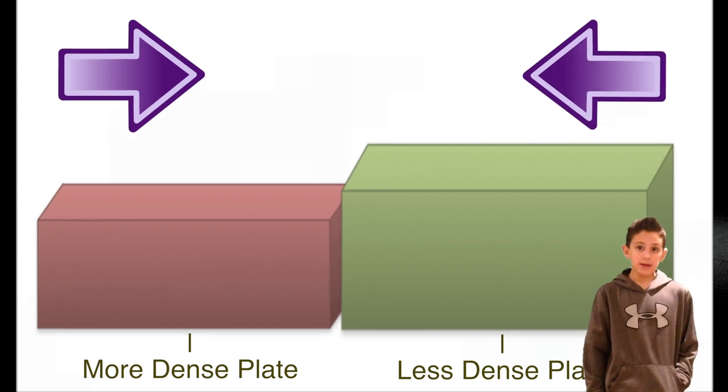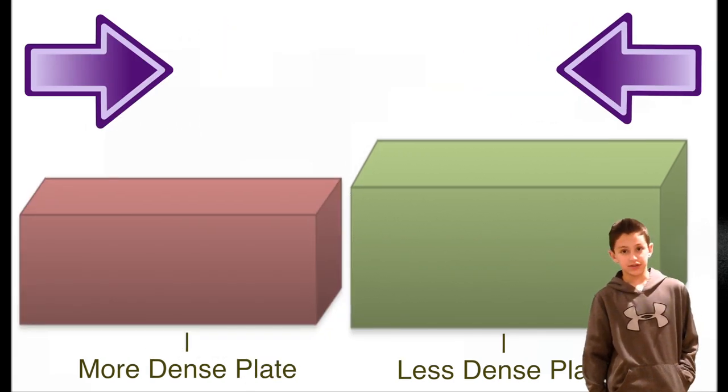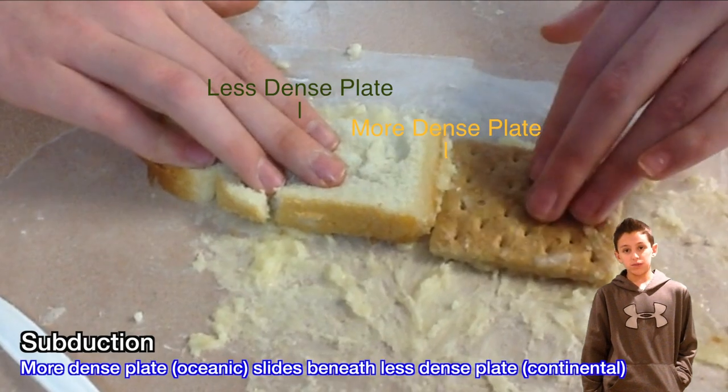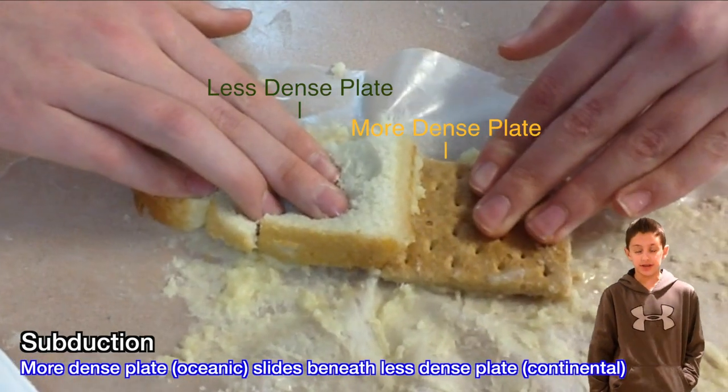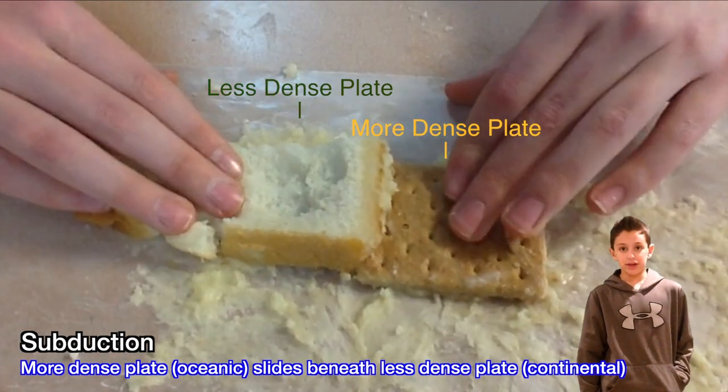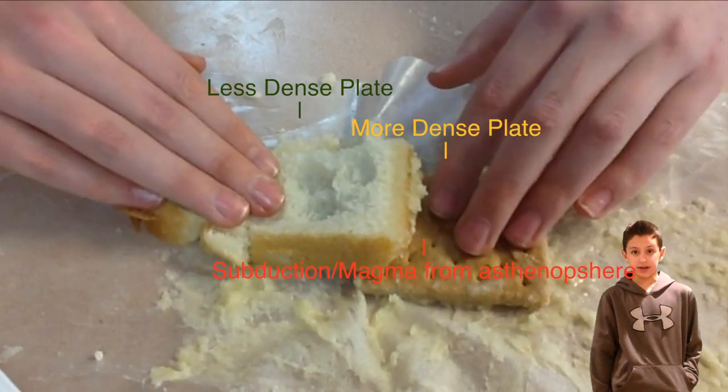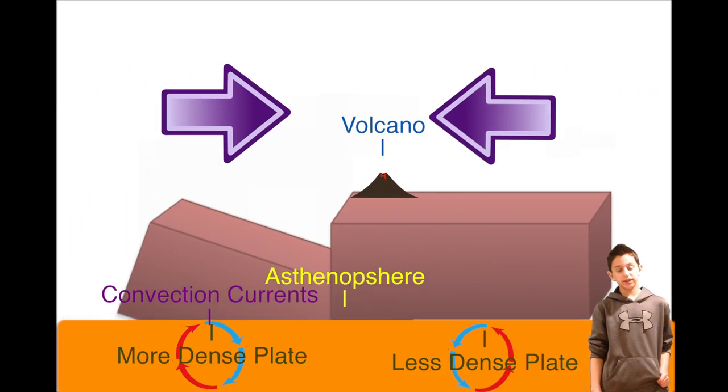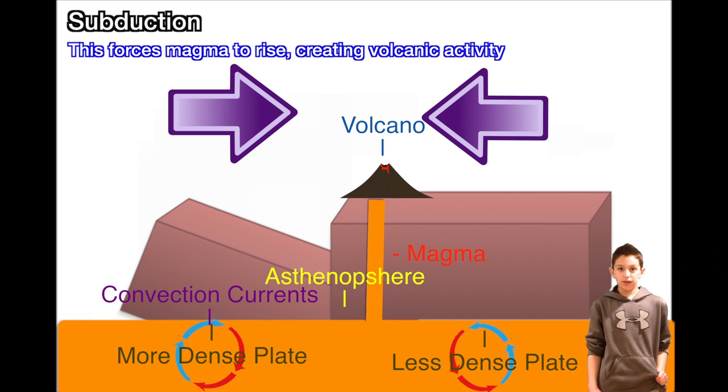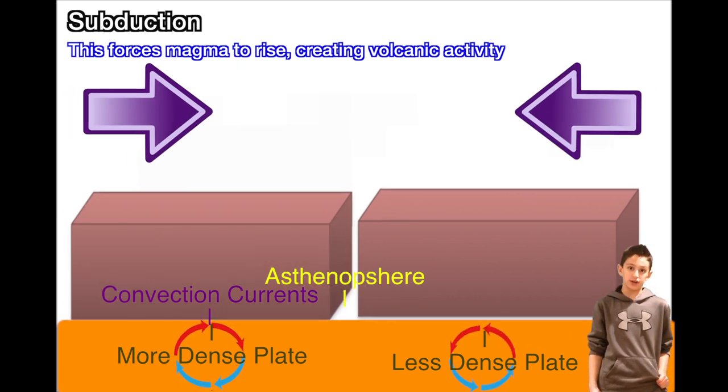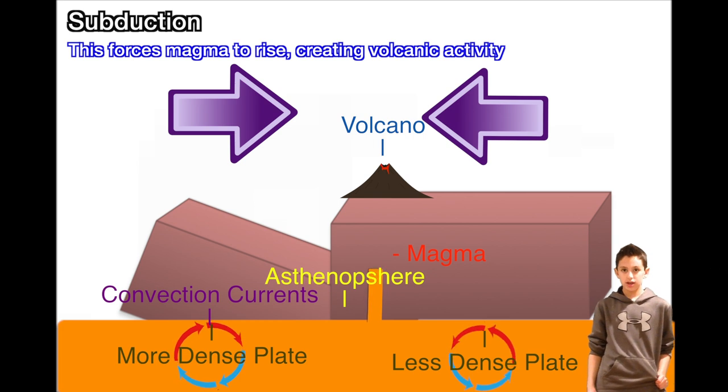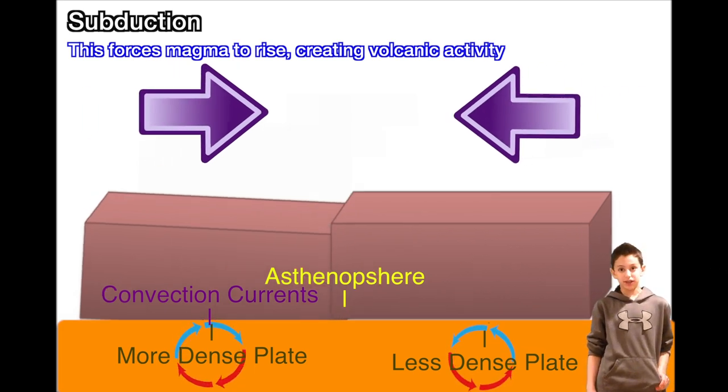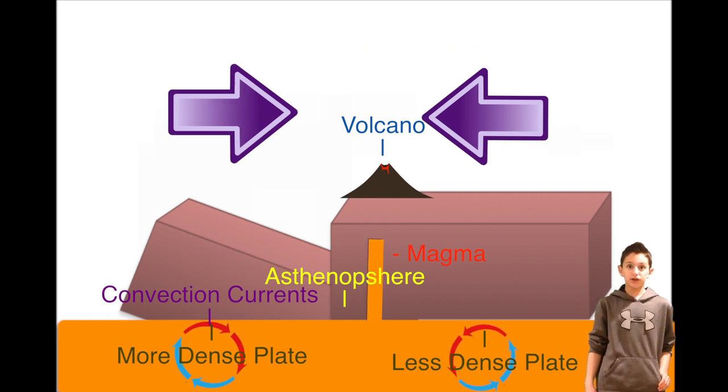So, you may be wondering what subduction even is in the first place. In a convergent boundary, often one plate is more dense than the other. For example, an oceanic plate is definitely more dense than a continental plate. The more dense plate will be forced down beneath the less dense plate, and once it reaches the asthenosphere, it will be turned into molten rock. This will force magma to rise up into magma chambers, producing volcanic activity.